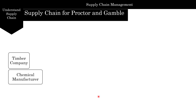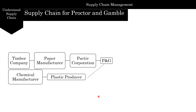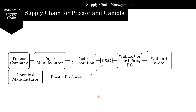Their raw material suppliers could be a timber company and a chemical manufacturer. The timber goes to a paper manufacturer, whereas the chemical manufacturer goes to a plastic producer. The paper manufacturer then goes to Pactiv Corporation, which produces the packaging for Procter & Gamble. The plastics send molds to Procter & Gamble, which produces and packages the product, then sends it to Walmart or a third-party distribution center, and finally to the Walmart store where the customer gets it.